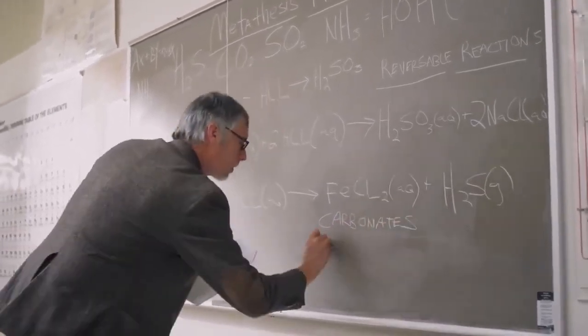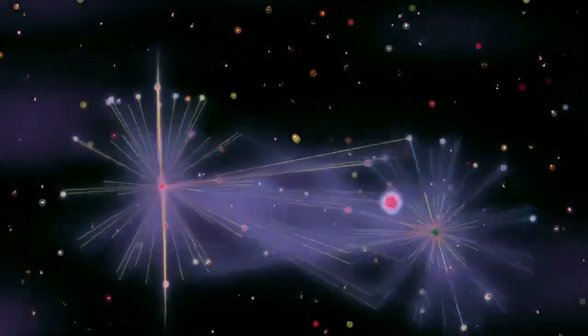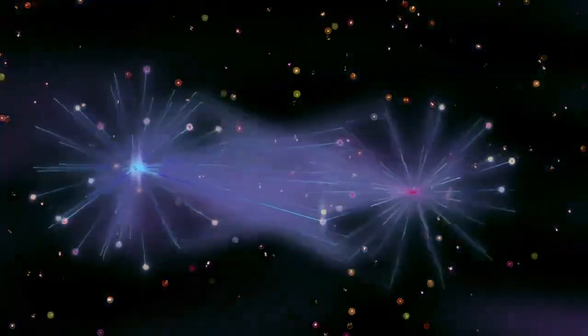Then there's the Higgs field, which Tong compares to molasses spread throughout the universe. The Higgs field gives mass to other particles, stopping them from moving at the speed of light. Tong notes that this comparison is not perfect because it suggests friction, while in reality, different particles interact with the Higgs field in various ways.